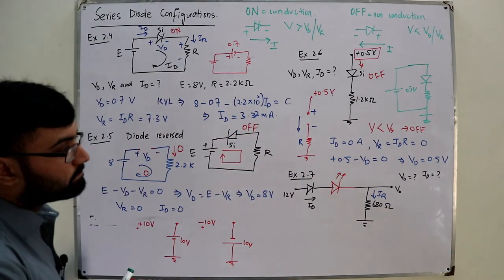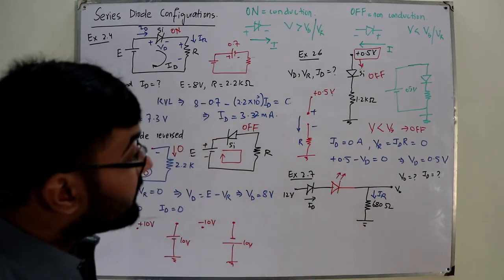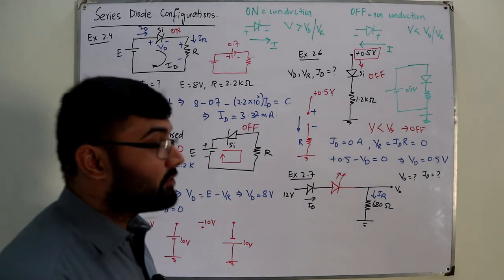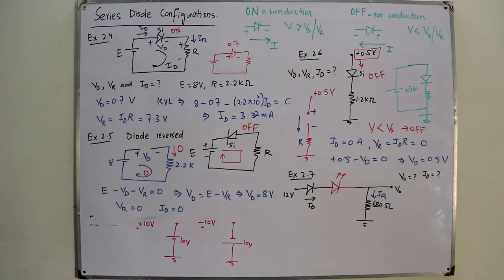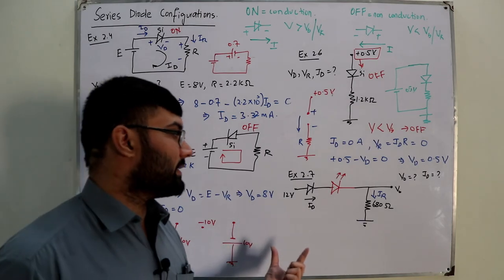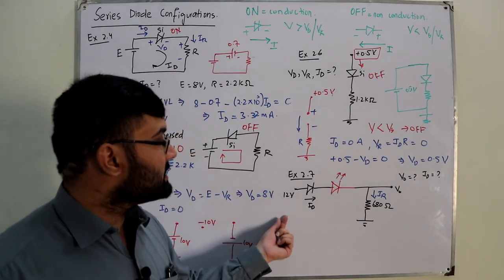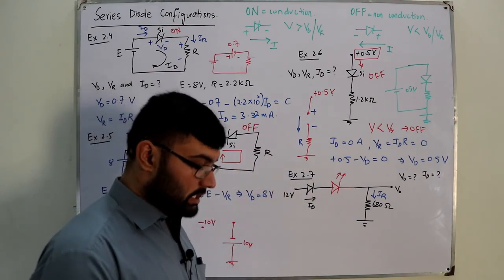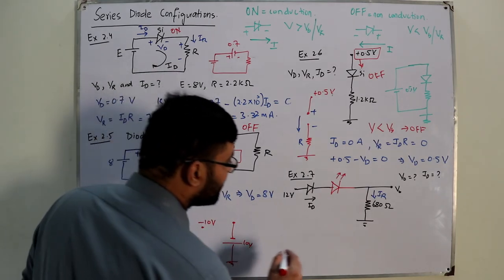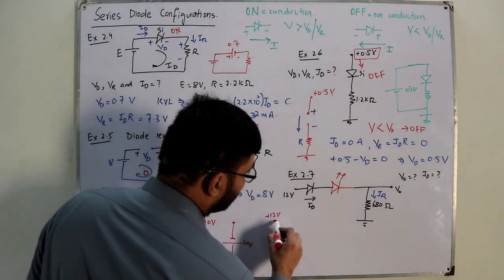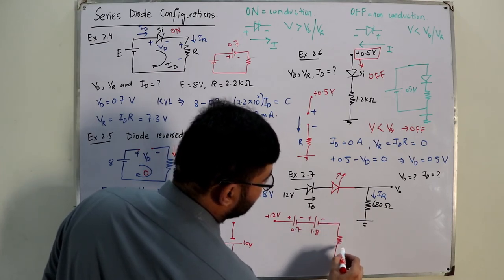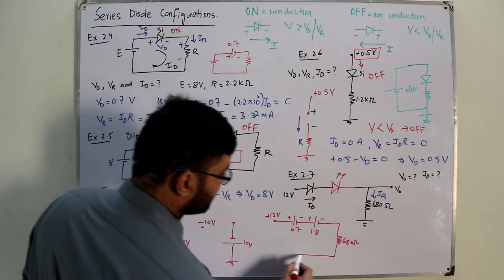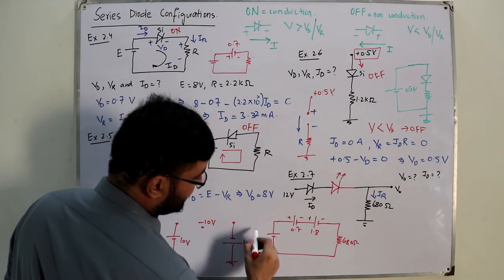First, check the on/off state. The supply is +12 V, which is greater than 0.7 V for the silicon diode and greater than 1.8 V for the red LED. It is even greater than their combined series barrier potential. The current is forward biasing, so both diodes are in the on state. We replace each with their barrier potentials: 0.7 V for silicon, 1.8 V for red LED.